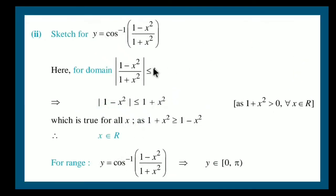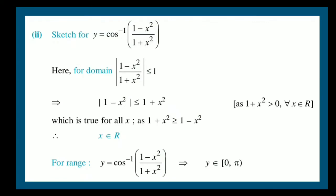Now let's try sketch number 2: y = cos⁻¹((1−x²)/(1+x²)). The domain of cos⁻¹(x) also requires |argument| ≤ 1, so |(1−x²)/(1+x²)| ≤ 1. Since both numerator and denominator are related by sign, |1−x²| ≤ 1+x², which is true for all x. Hence x belongs to all real numbers, and the range is [0, π] due to cos⁻¹.